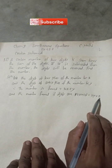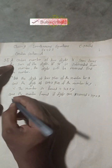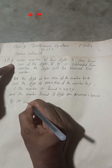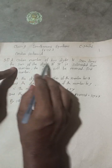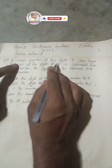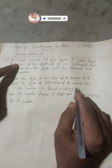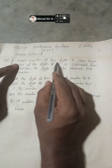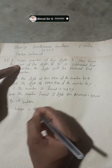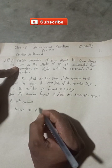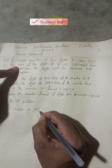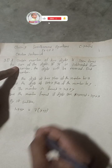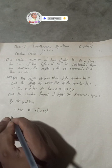Now we write the first condition. A certain two-digit number is seven times the sum of its digits. We supposed the two-digit number is 10x + y. So 10x + y equals seven times the sum of the digits, which is x + y. That gives us 10x + y = 7(x + y).